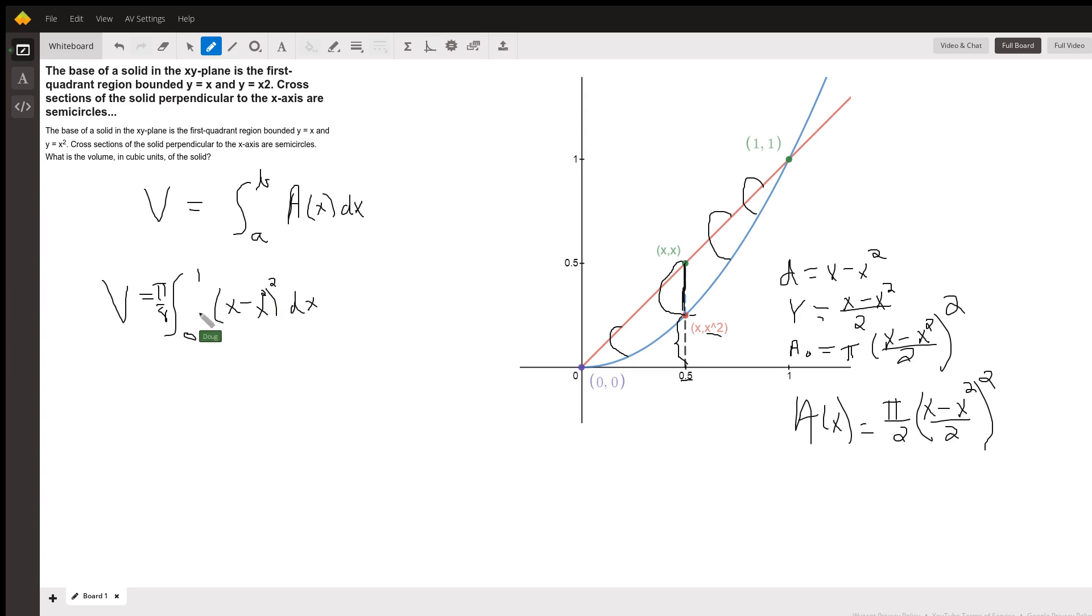Now to find the antiderivative, we'll square this binomial, then find the antiderivative term by term and evaluate from 0 to 1. I'll leave that to you. There you go. Hope that helped. If you have any questions, post a comment.